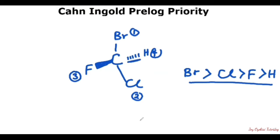That tells us that this atom is pointing backward, and that is how the lowest priority should actually be — it should be pointing backward, so it's okay for this particular compound. The wedge bond, the one that is in bolded form, tells us that it's facing the viewer, so it's facing forward.